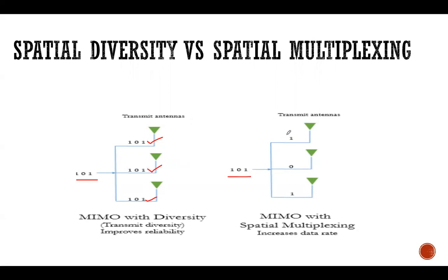Rather, in spatial multiplexing we send different portions of the data over different antennas. So instead of sending 1, 0, 1 via all three antennas simultaneously, we send 1 over one antenna, 0 over another, and 1 over a third. This is similar to our OFDM technique, where different portions of the signal are sent at the same time but each one is orthogonal to each other.